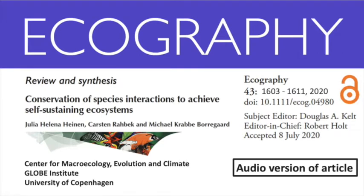A successful example of the implementation of such functional rewilding is the introduction of Aldabra giant tortoises, Aldabrachelys gigantea, on the island Ile aux Aigrettes in Mauritius. The ebony tree, Diospyros egrettarum, is completely dependent on fruit-eating animals for seed dispersal, historically the domed tortoise Cylindraspis inepta, which is now extinct. The interaction has been substituted by introducing the Aldabra giant tortoise to the island, and this species now disperses the seed successfully. While in this case a tortoise is vital for ensuring the sustained persistence of the ebony tree, such projects are inherently risky, and run the risk of overshadowing other, undescribed interactions.